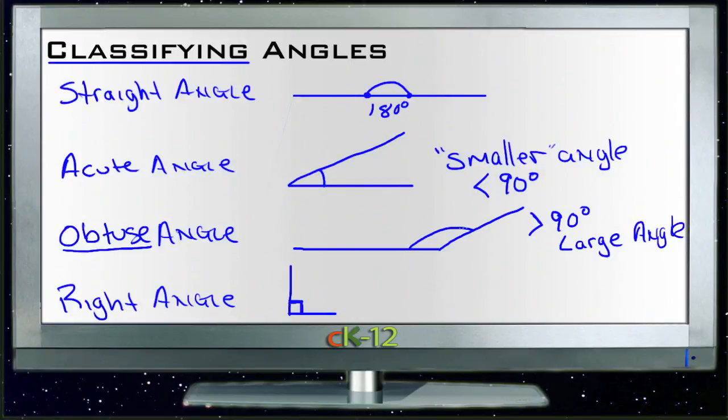Instead of a rounded corner like we usually do to identify other angles like these up here, if it's a right angle we actually draw a little square box in that corner to say that it is exactly equal to 90 degrees.